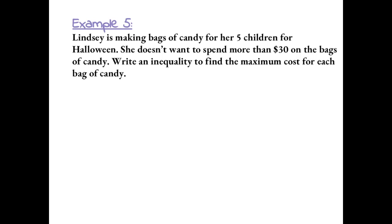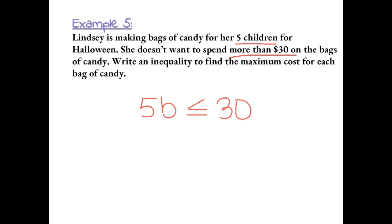Example 5: Lindsay is making bags of candy for her five children for Halloween. She doesn't want to spend more than $30 on the bags of candy. Write an inequality to find the maximum cost for each bag of candy. If Lindsay is making bags for five children and each bag costs an unknown amount, we can show this as 5 times B, where B is the cost per bag. She doesn't want it to be more than $30, so this has to be less than or equal to $30.